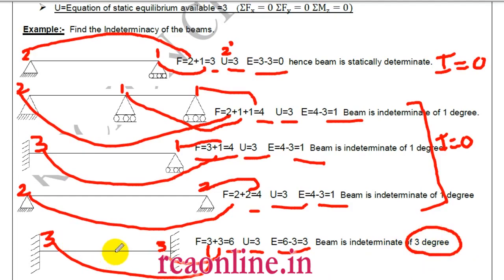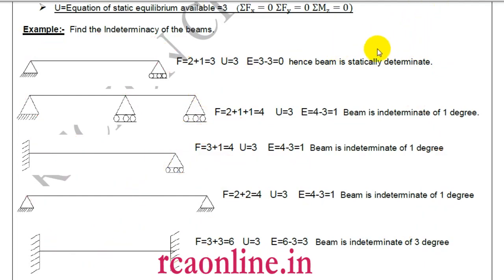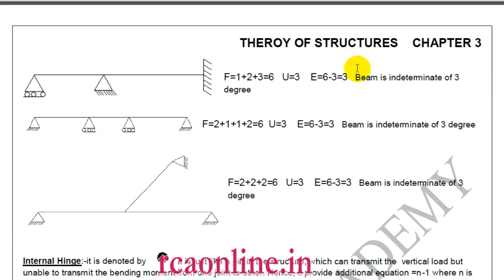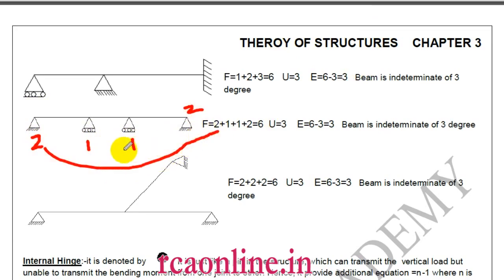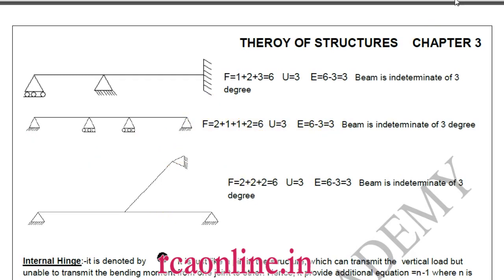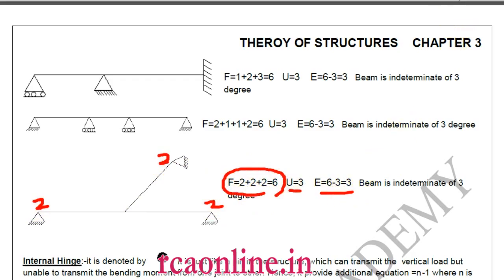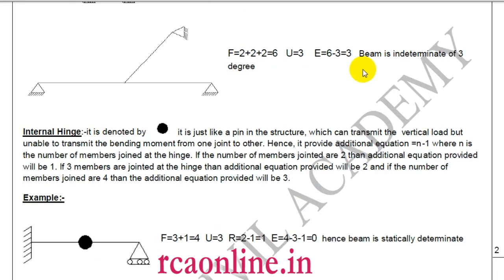When E equals 3, it means three additional equations are required to solve the structure using a statical method. Taking more examples: with supports giving f=2+1+1+2=6, u=3, we get E equals 3. Another case with three hinges: f equals 6, u equals 3, E equals 3.